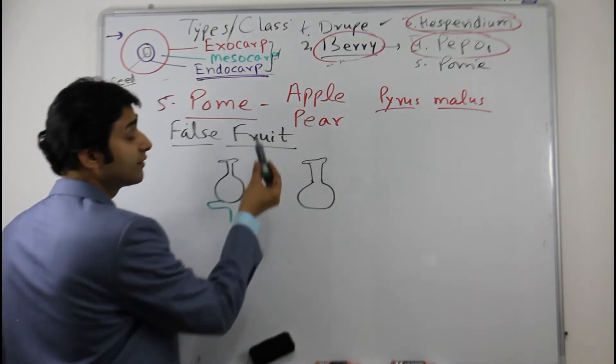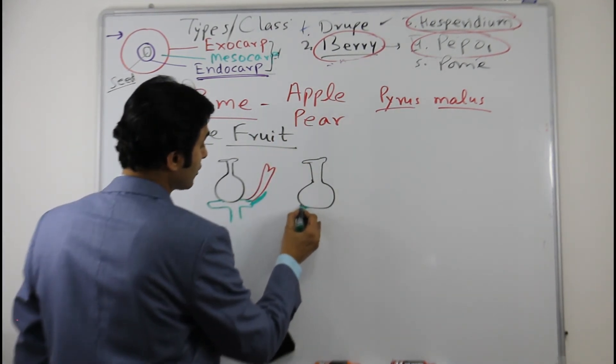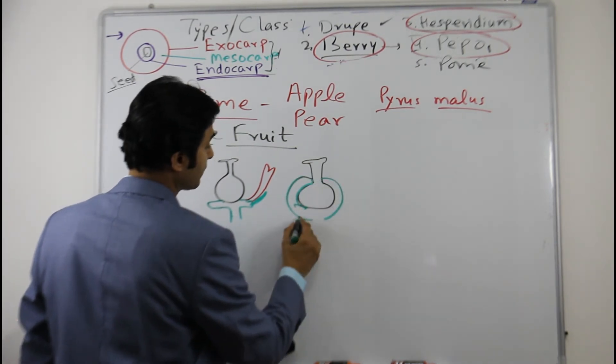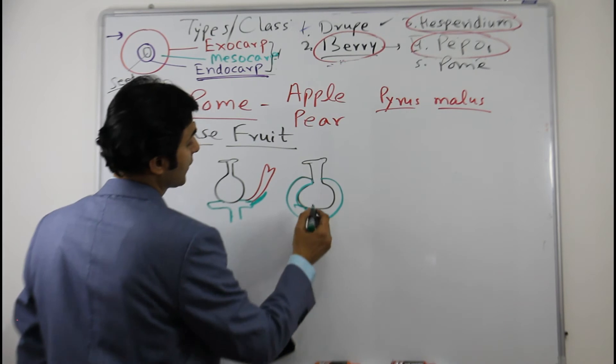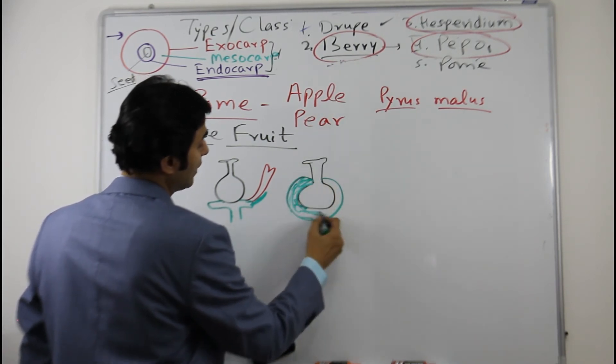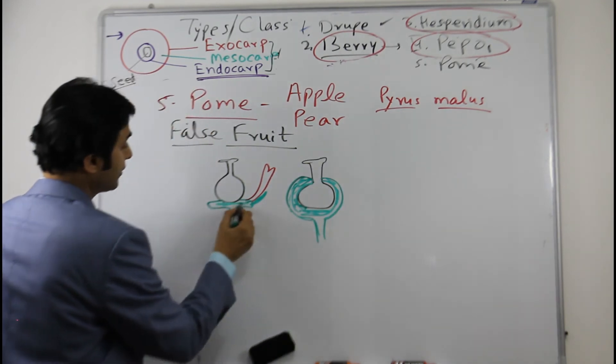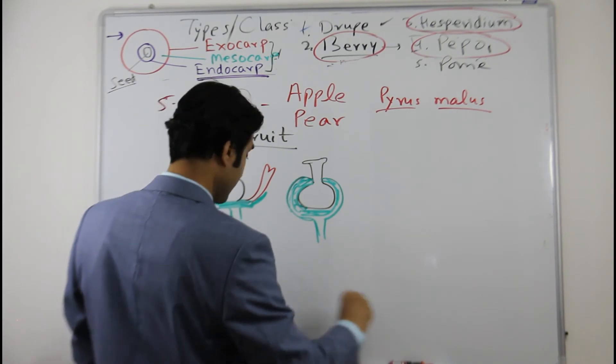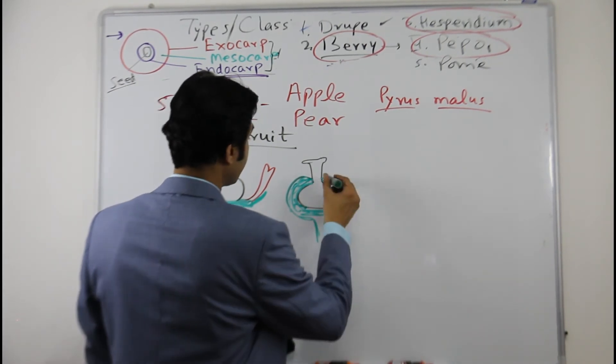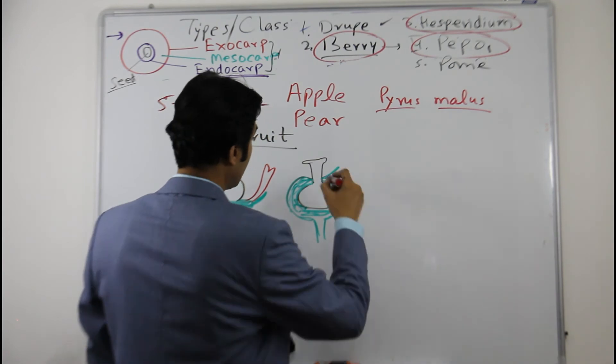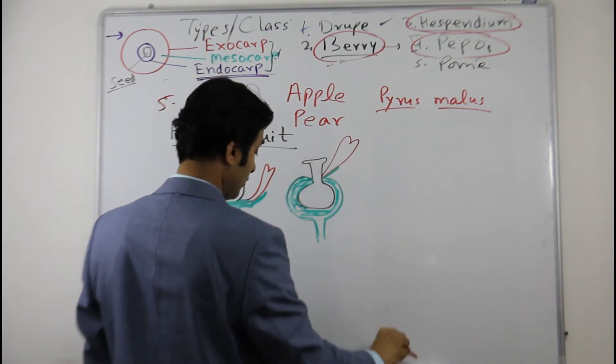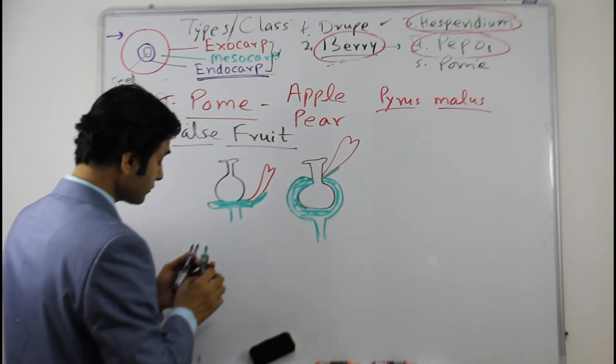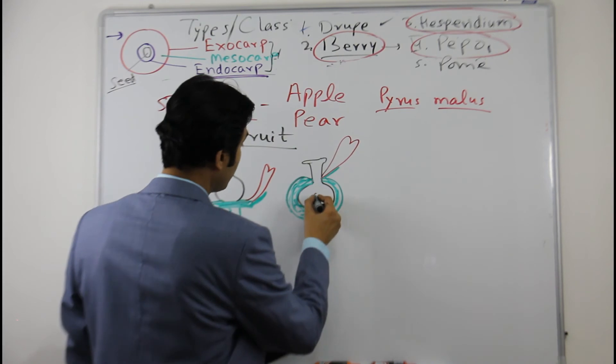In the inferior ovary, in these conditions what happens, the thalamus does not stop here. It continues to grow and it grows like a cup-shaped structure like this. Now this is the thalamus or receptacle. Here the thalamus is like this in superior ovary, but in the inferior ovary the thalamus is like this and the calyx now is coming from here, the thalamus, and this will be the corolla and then the anthers. So what happens in apple, the ovules are here.